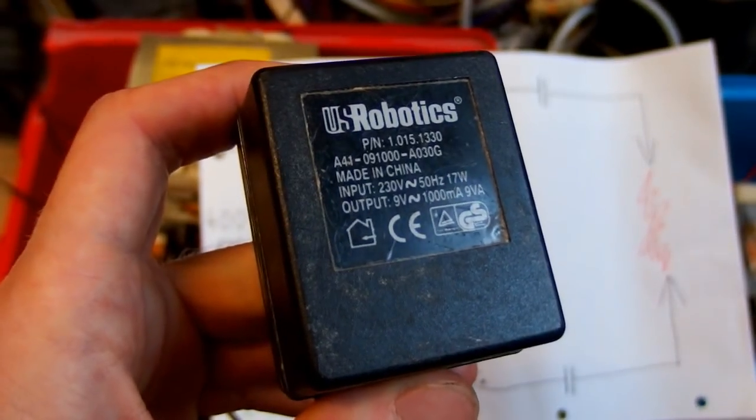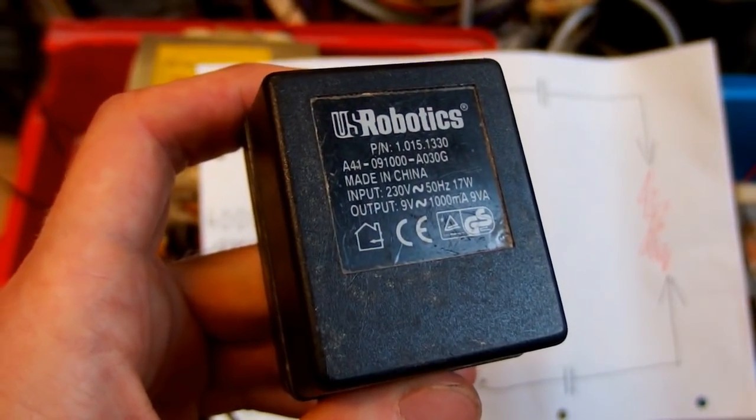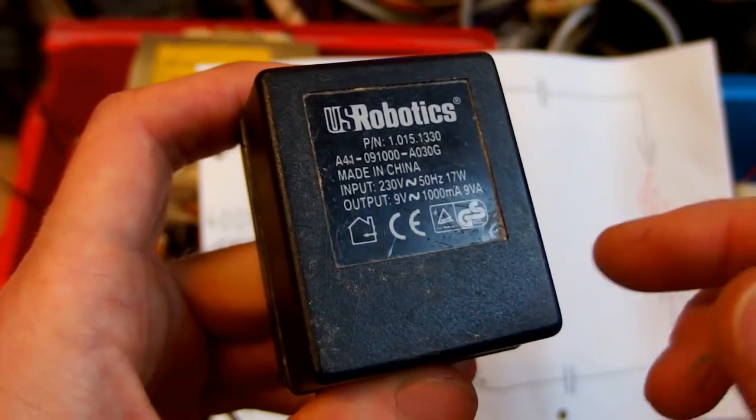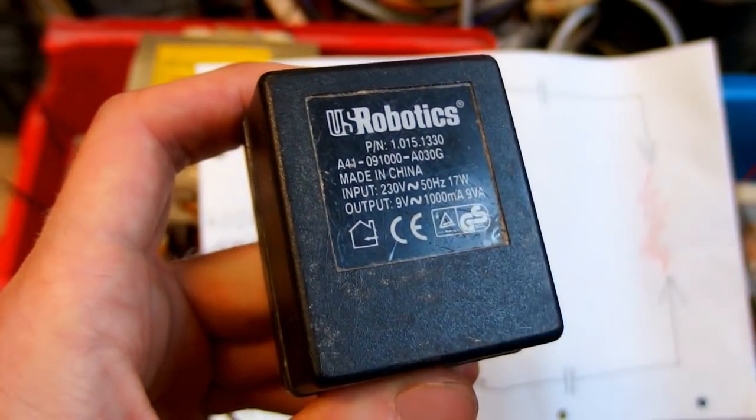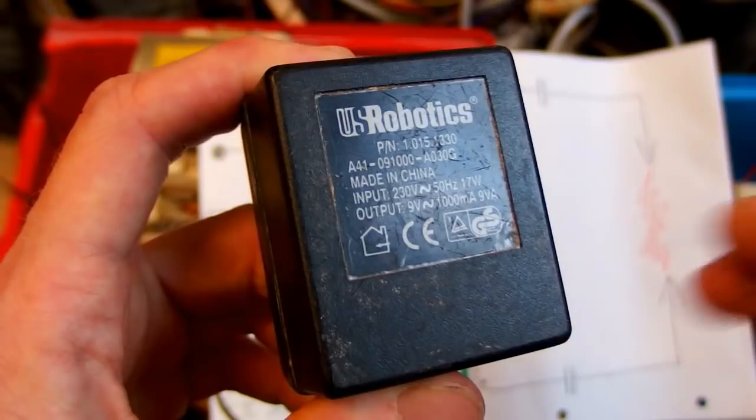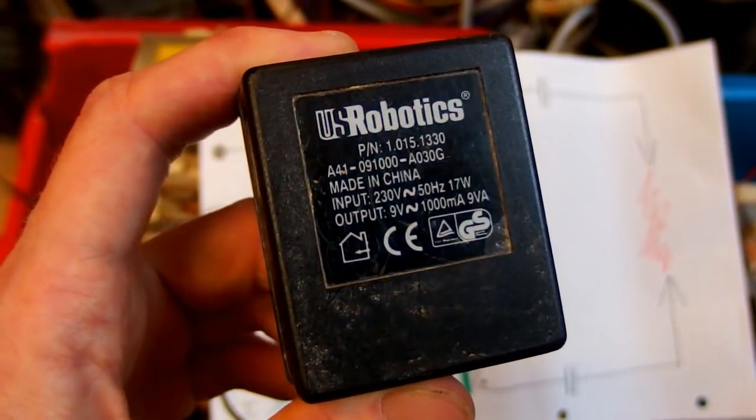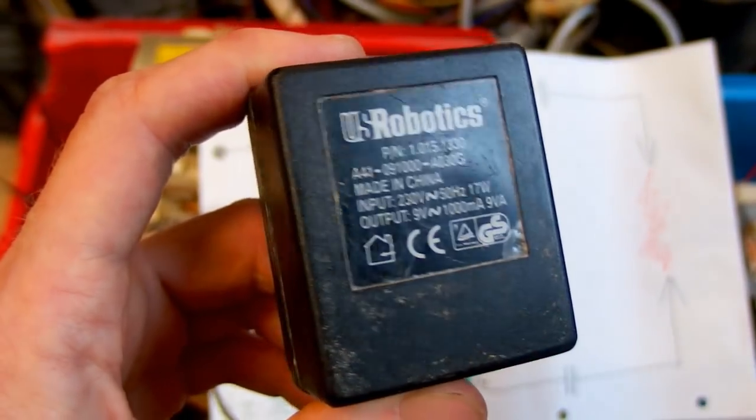To measure the ratio of the transformers and to check if the voltage is adding or subtracting, it's good to power them using a small AC voltage, for example from a small AC power supply. This one is 9 volts AC.